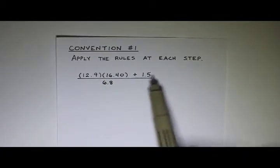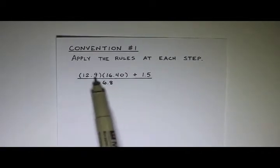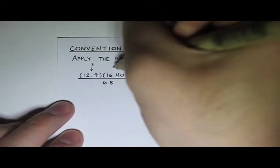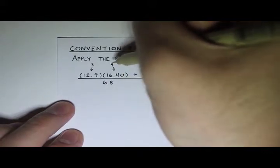Suppose I have this calculation. According to order of operations, the first thing I would do is this multiplication up top here. And by multiplication, we count sig figs. So remember, this has three, this has four sig figs, three wins.